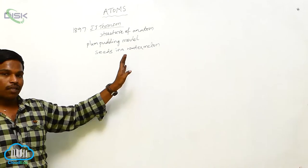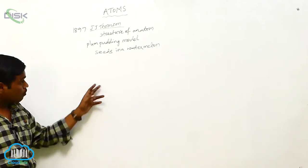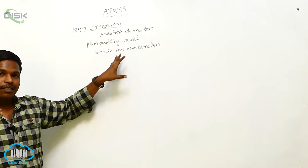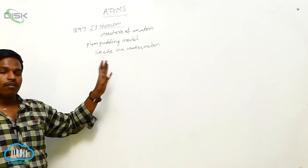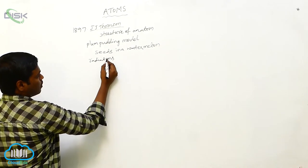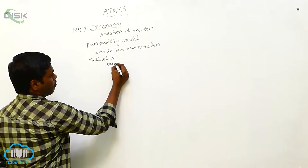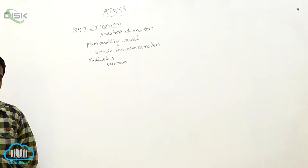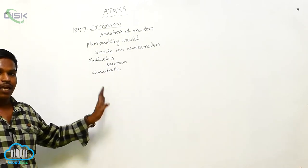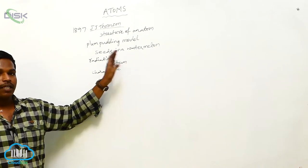After J.J. Thomson, there are some other atomic models. In the current understanding, this atom consists of positively charged ions and negatively charged ions, and the negatively charged ions are revolving around the nucleus, giving off radiations — that is, electromagnetic radiations — from which we get a spectrum. Each element or each atom has a characteristic spectrum, which we will study in this lesson.